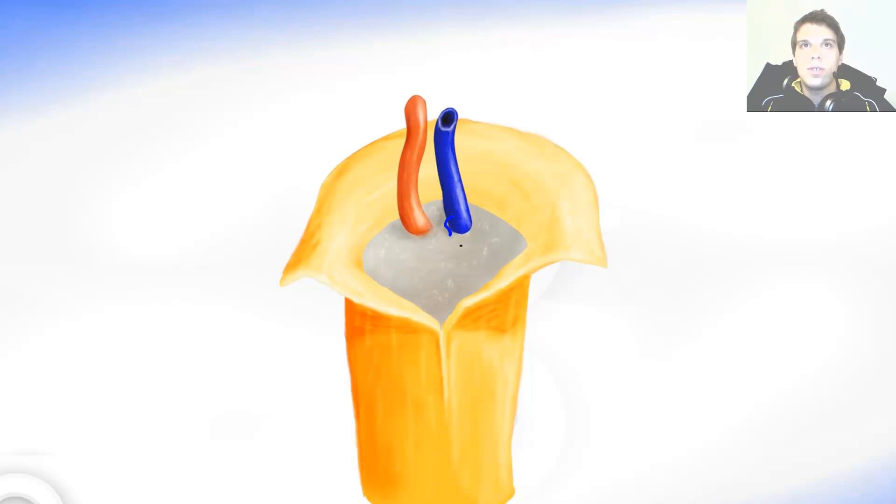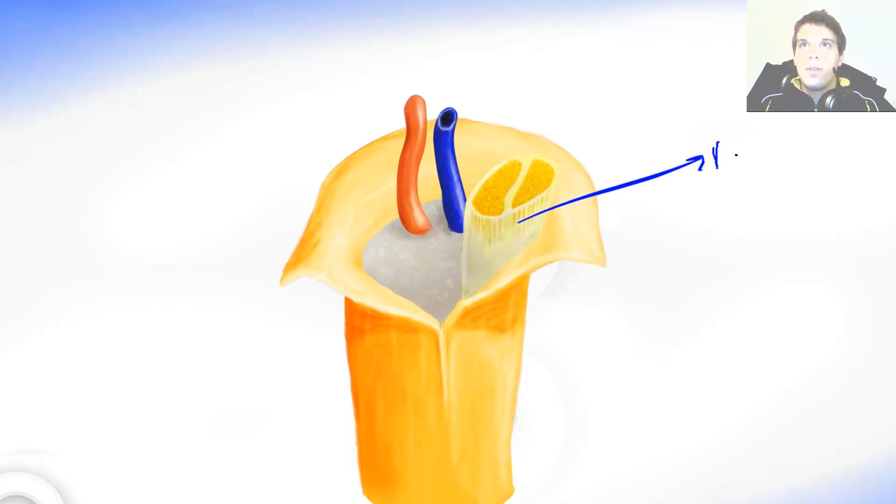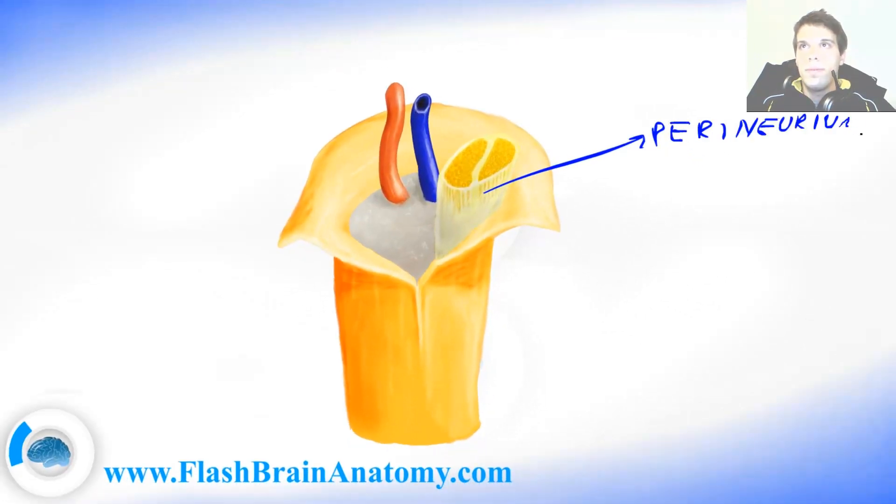Smaller branches out of these leave and go deeper inside of perineurium. The perineurium is the connective tissue that encloses the nerve fibers. So this over here is the perineurium. And this over here was the epineurium.